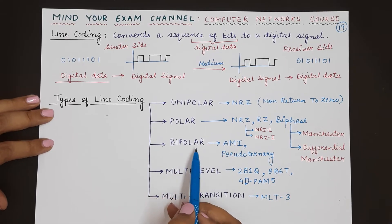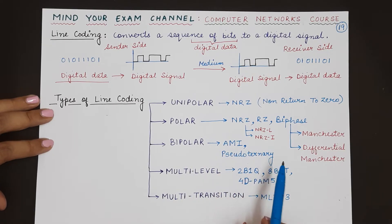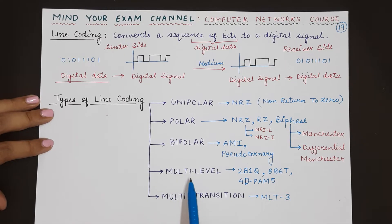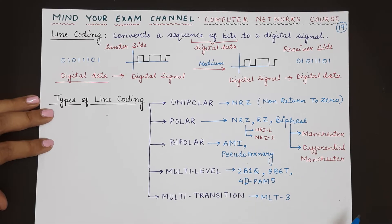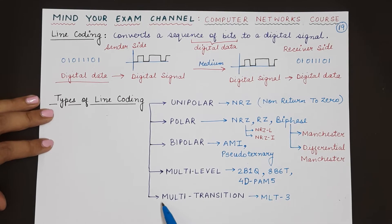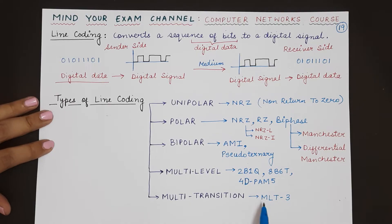The next type is bipolar line coding, which consists of AMI and pseudo-ternary sub-techniques. The fourth type is multi-level line coding, which consists of three main types: 2B1Q, 8B6T, and 4D-PAM5 — we will understand the meaning of each in detail in coming videos. The fifth type is multi-transition, which has a subcategory of MLT-3.